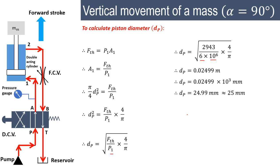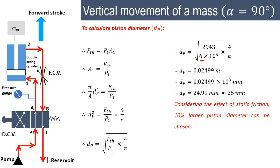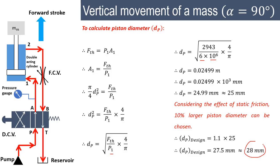Even though theoretically there are no frictional forces and we used only the limiting condition, we apply a factor of safety of 10%, so 10% larger piston diameter is chosen. The design diameter is 1.1 × 25 = 27.5 mm, which we round to 28 mm. This is the chosen cylinder diameter. During the return stroke, the weight comes down under gravity so there is no problem with the return stroke.